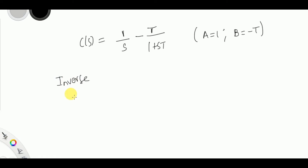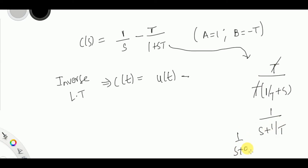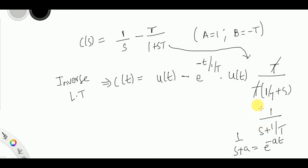Now taking the inverse Laplace transform, C(s) converts into c(t). The term 1/s gives a unit step function u(t). For the second term, taking T as common gives T·[1/(sT+1)], and T cancels to give 1/(s + 1/T). The inverse Laplace transform of 1/(s+a) is e^(−at), so here a = 1/T, giving e^(−t/T)·u(t).